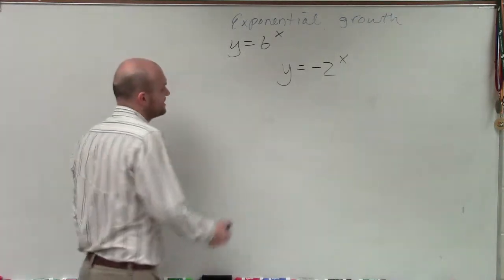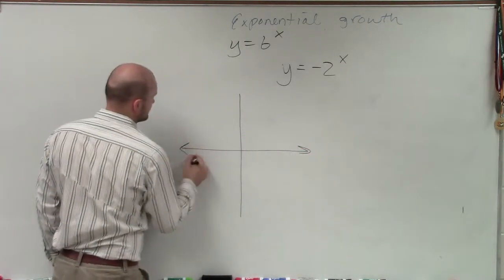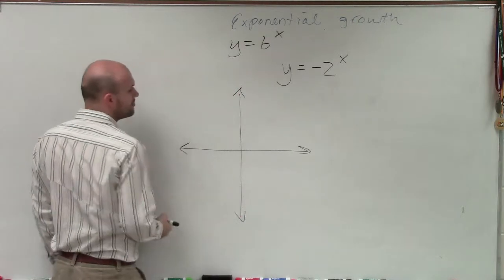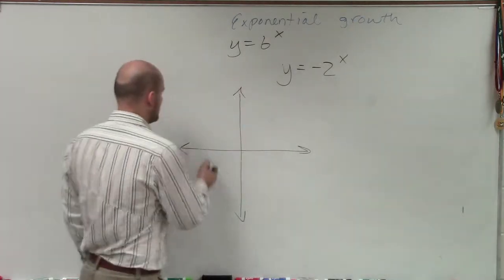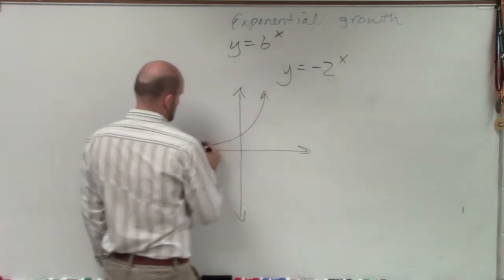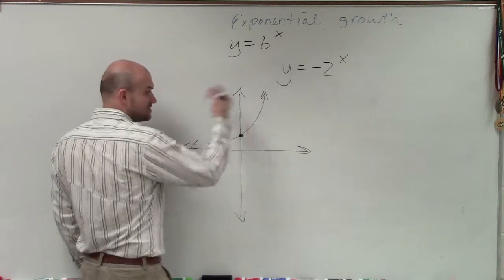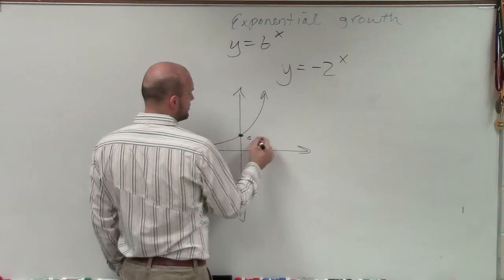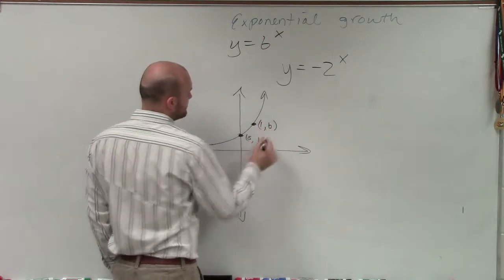When I'm looking at this, it's important to understand there's two very important points when we're looking at a growth function. First of all, we have our y-intercept, which we know, unless there's any transformations, is always going to be at the point (0, 1). But then we also have another point, because when we put 1, we know that we're going to have b.